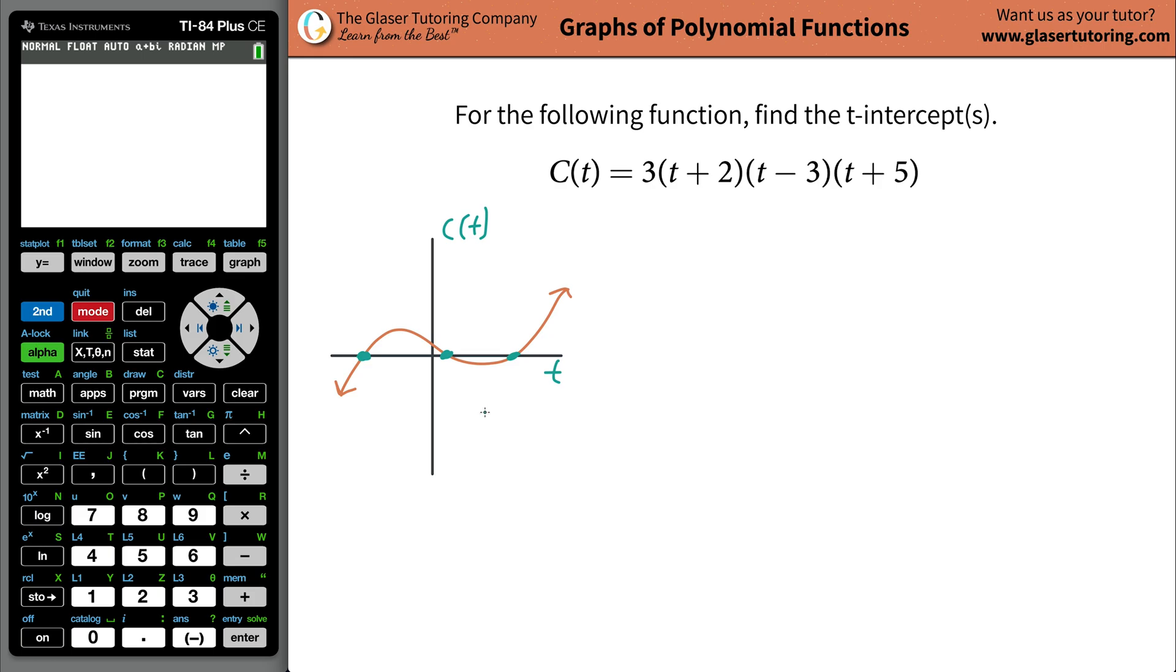The t intercepts are going to be the locations here on this graph that cross the t axis, or that touch, or that intersect, or that intercept the t axis. Now, it turns out that we know three things. Excuse me. It turns out we have three points, but we know one thing. We know one thing that's very unique about these three points, that these three points have in common, actually. Do you know what it is?